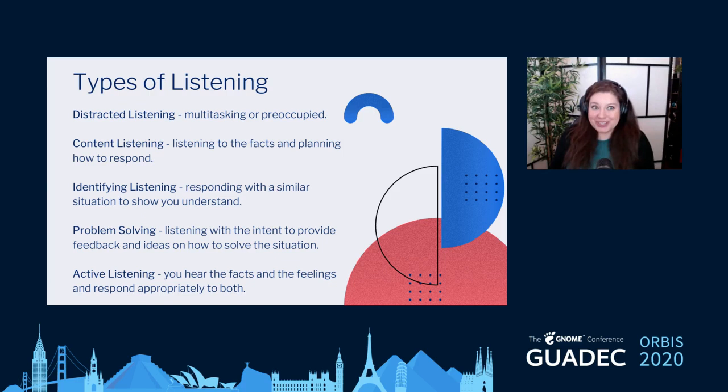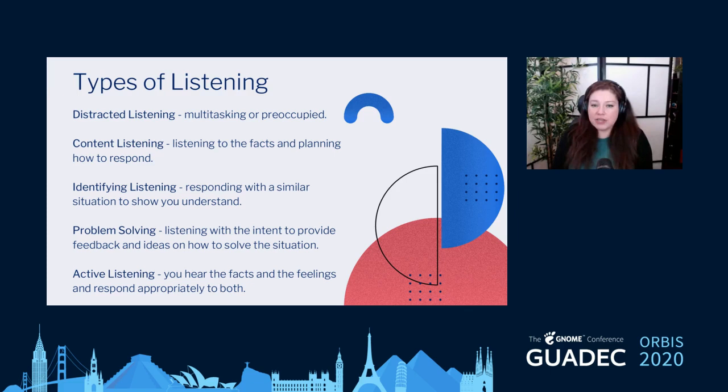Maybe some of you have experienced being in a conversation where the other person says 'I don't feel like you're listening to me,' and yet you're able to repeat exactly what they said — but they still feel unheard. This confuses and frustrates both sides. You feel like you're listening and the other person just does not feel heard. So I'd like to talk about the different types of listening so you can start to analyze how you're listening in each conversation.